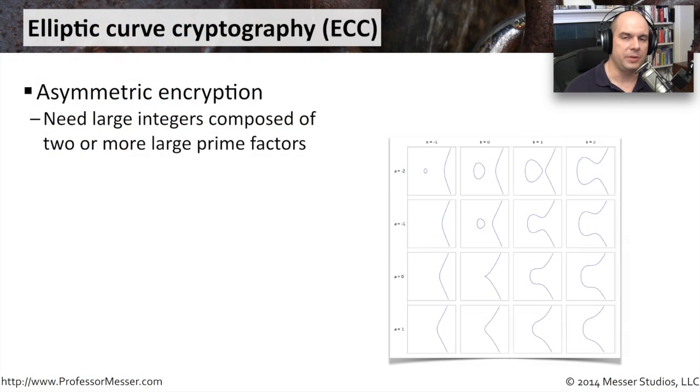An emerging technology in cryptography is something called elliptic curve cryptography, or ECC. ECC was created because of the constraints that we have associated with the calculations that we use in asymmetric encryption.